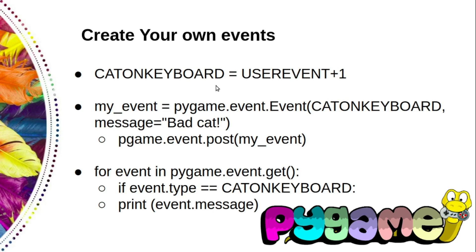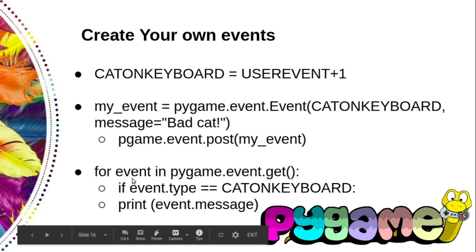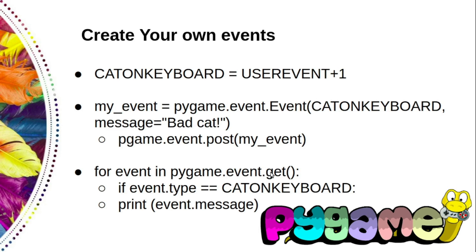So my_event = pygame.event.Event(cat_on_keyboard, message='bad cat'), and then we post it with pygame.event.post(my_event). The handling of user events is done in the same way as usual pygame events — we just check the event type to see if it matches our custom event. In the event loop: for event in pygame.event.get(), if event.type == cat_on_keyboard, we can print event.message.